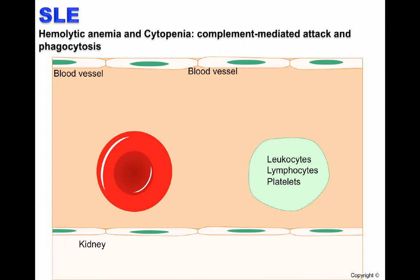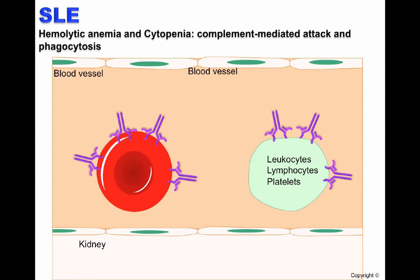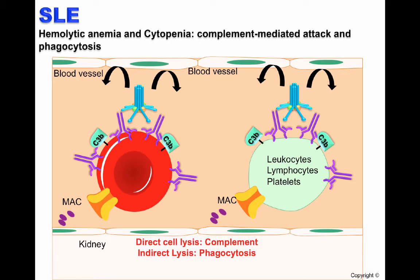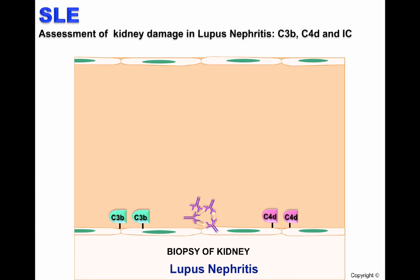As we discussed earlier, during SLE, autoantibodies are formed and bind to red blood cells, leukocytes, lymphocytes, and platelets. Then the classical pathway is initiated, leading to C3B deposition and MAC formation, which results in direct RBC lysis. Similarly, indirect lysis due to phagocytosis can also occur, in which cells coated with autoantibodies are recognized by macrophages and phagocytosed. Overall, these processes cause anemia and cytopenias.